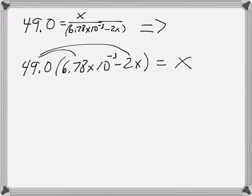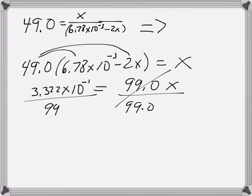I'm trying to keep this video under 11 minutes because my last one was too long and YouTube wouldn't load it. When I multiplied that out, I got 3.322 times 10 to the negative 1 minus 98.0x equals x. If you bring this to this side, you basically end up with equals 99.0x. Now we're going to divide both sides by 99.0 and solve for x because that's going to cancel out. And lo and behold, x equals 3.36 times 10 to the negative third molarity.